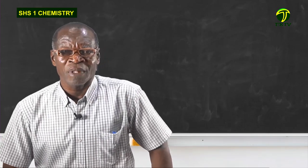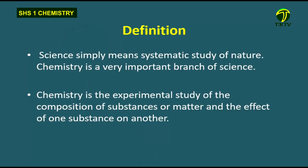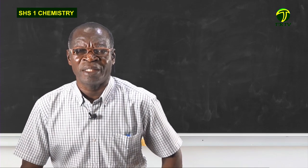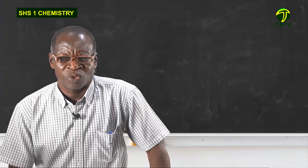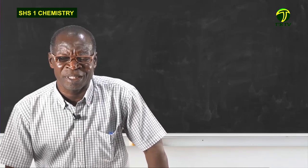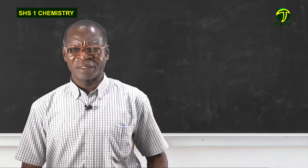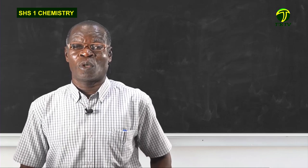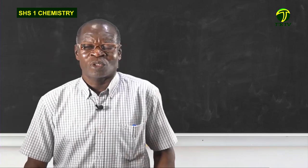Chemistry is defined as the experimental study of the composition of substances or matter, and the effect of one substance on another. In terms of experimental composition, we have a substance and we try to find out what makes that substance. Then when we combine two substances, what will be the effect? For example, if I put sodium chloride — common salt — in water, what will happen?